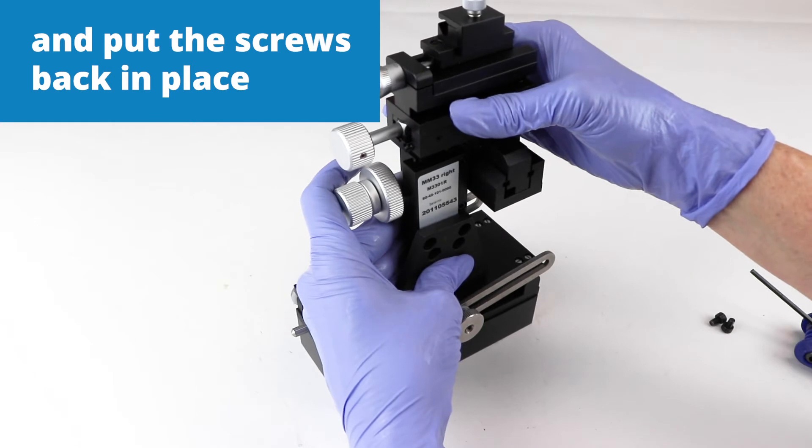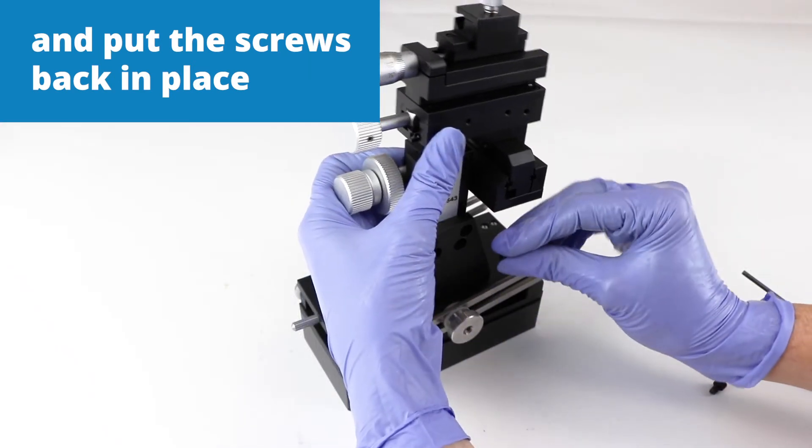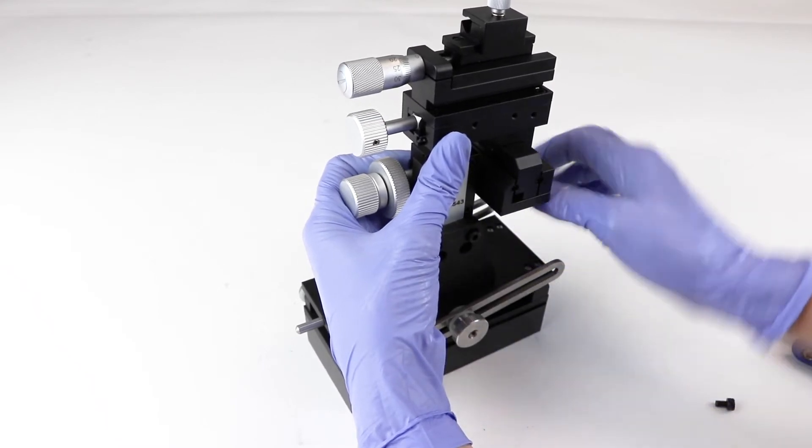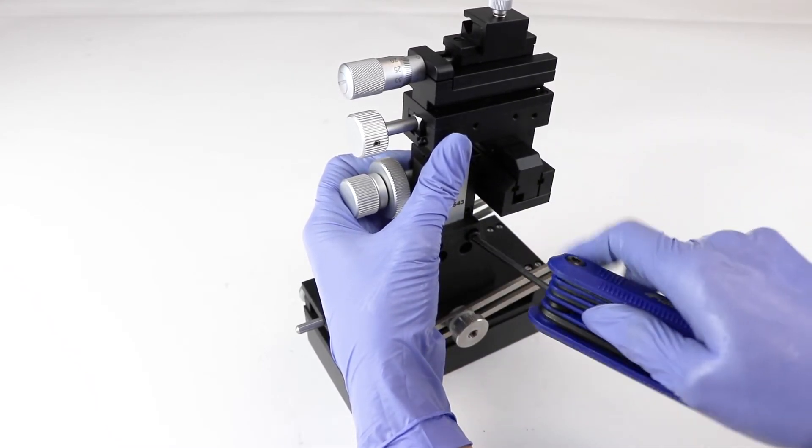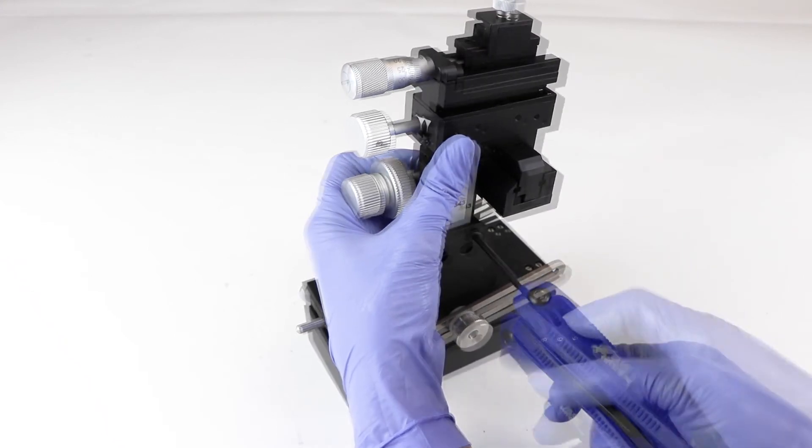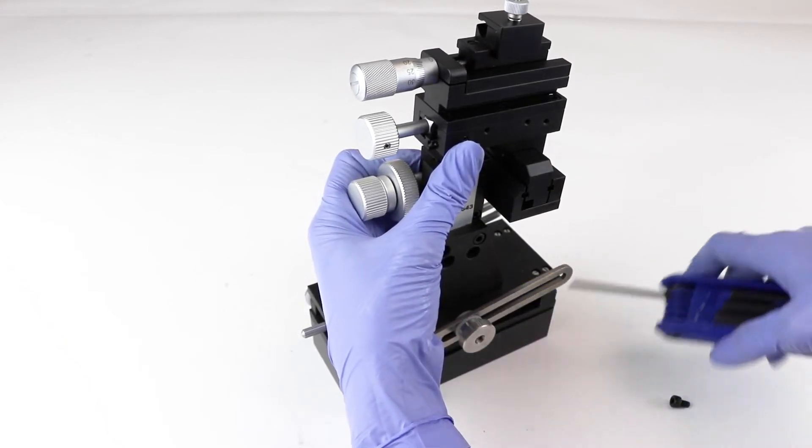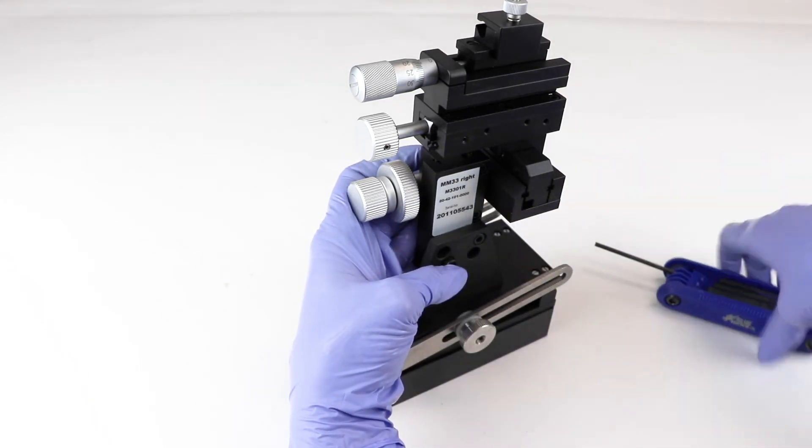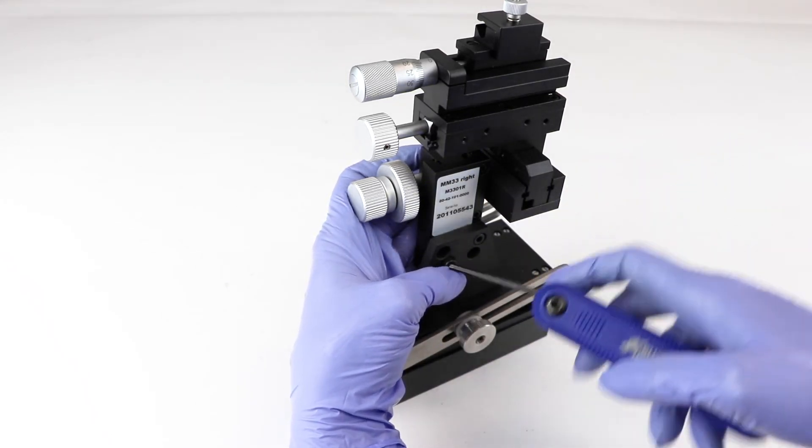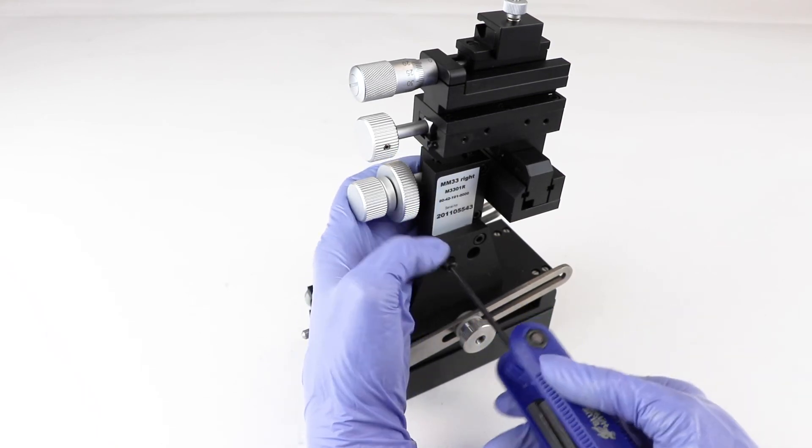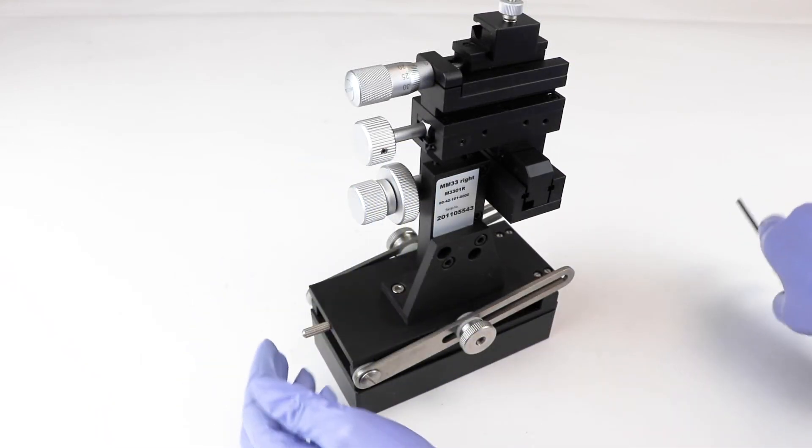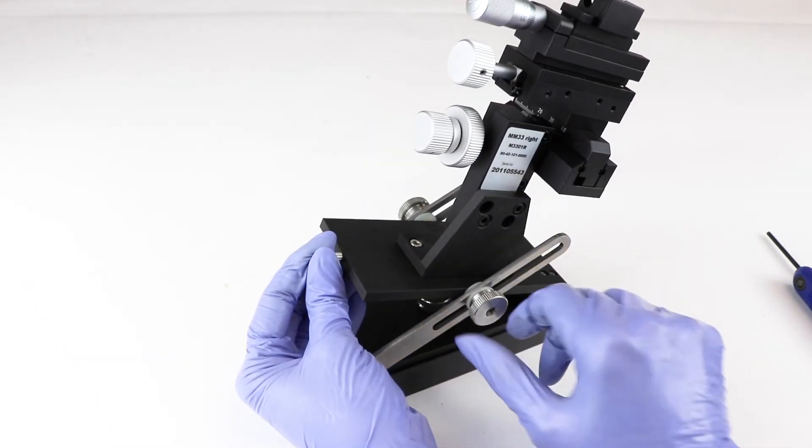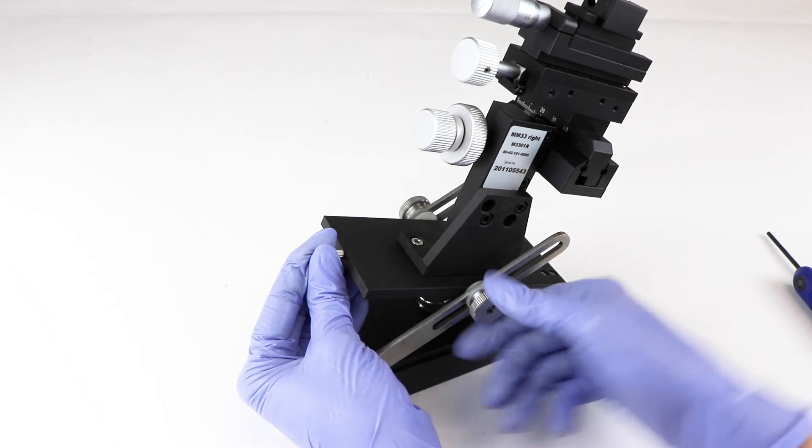And put our screws back in place. There we go. Now we can position the manipulator where we want and tighten it down in place.